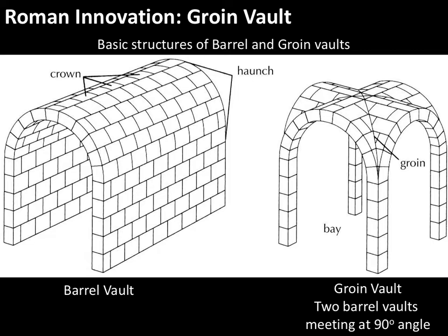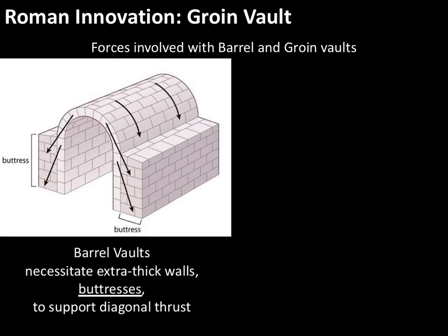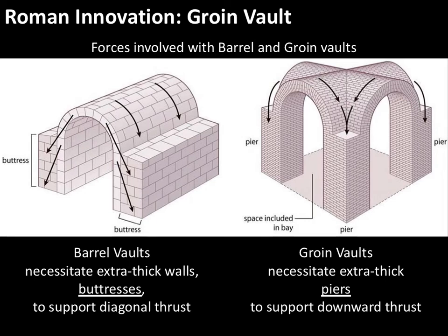This technology has interesting results related to the physics involved. In a barrel vault, you need really thick walls. The black arrows in the diagram show forces that gravity presses down onto the structure, with outward pressure from the vault requiring extra thickness on the exterior wall — that's where we get the idea of a buttress. With the groin vault, all the weight comes down into the corners, requiring a really chunky pier to hold up those corners.